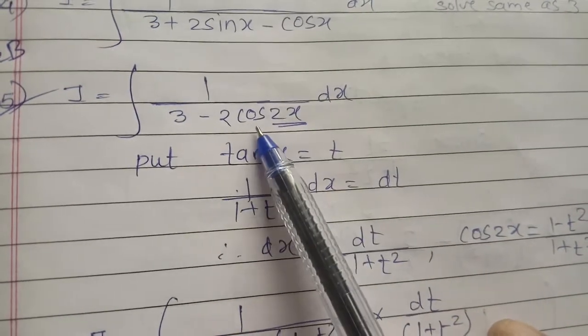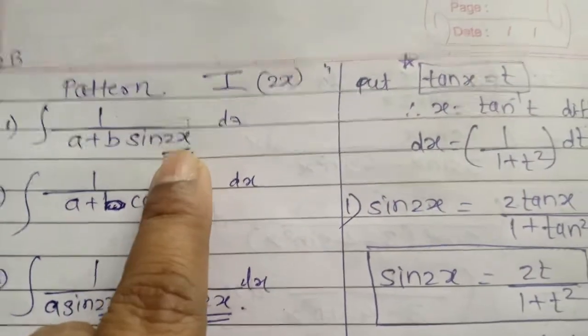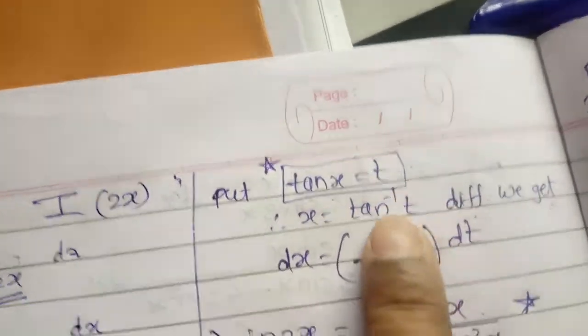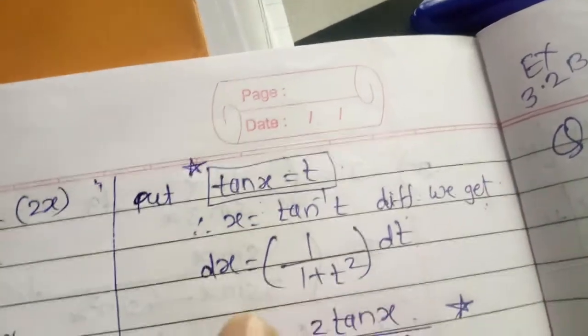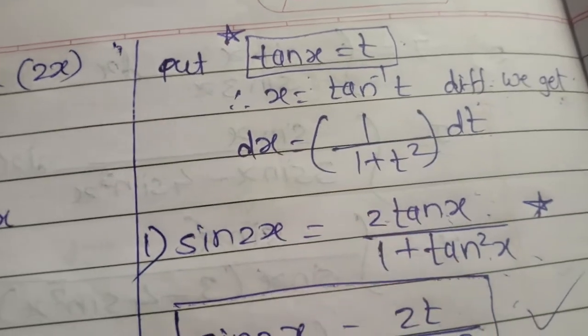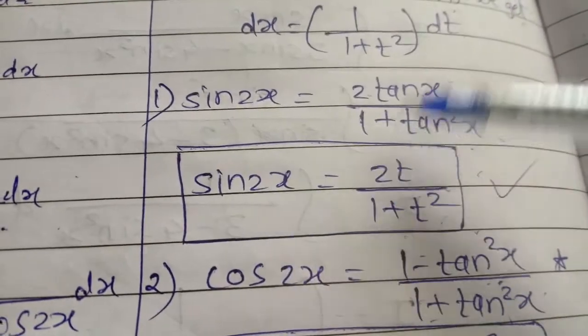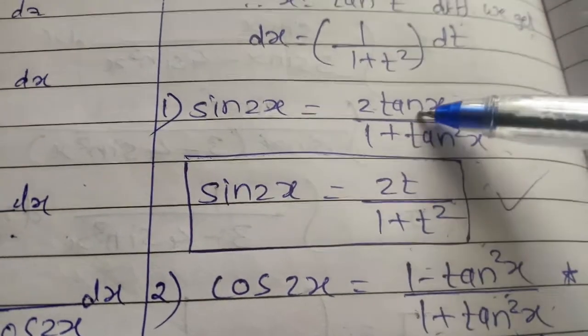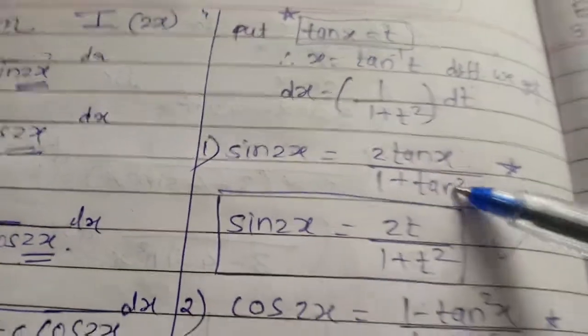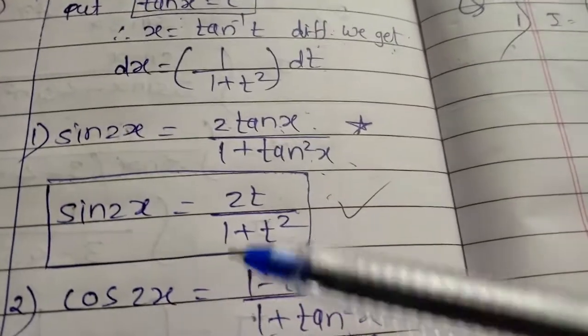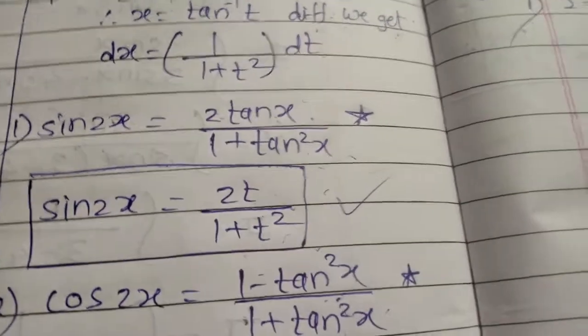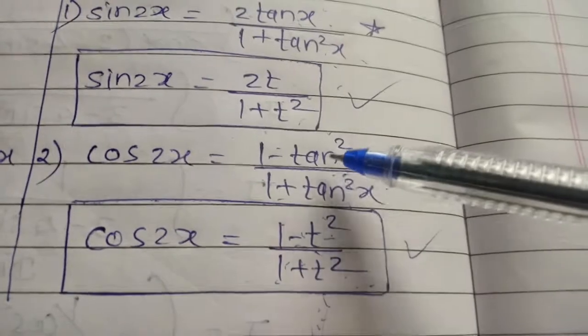In previous examples we looked at examples of x. Now here we have cos 2x, so we have to use substitutions you have already learned. Whenever you see a 2x type of example, put tan x equals t. Then x equals tan inverse of t. Differentiating, dx equals 1 upon (1 plus t square) dt. For sin 2x, the formula in terms of tan gives sin 2x equals 2t upon (1 plus t square). For cos 2x, we use the formula: 1 minus tan square x upon 1 plus tan square x, that is 1 minus t square upon 1 plus t square.